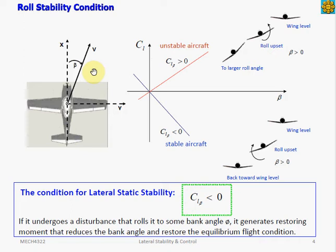An airplane that has static roll stability would develop a restoring moment when disturbed from wing level attitude. Equilibrium or trim condition is when rolling moment is zero and sideslip angle is zero. Looking at the graph of rolling moment coefficient CL versus sideslip angle beta, the origin signifies trim condition. For a statically stable aircraft, we want the slope CL_beta to be less than zero.